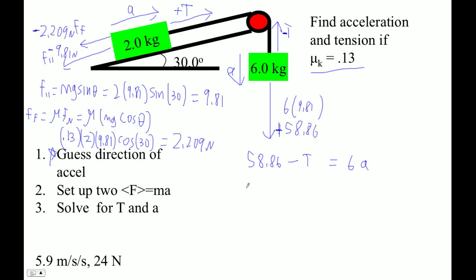So now we're all set. We're going to go T minus the force of friction, 2.209, minus the parallel force, 9.81, equals the mass, which is 2 times A. And now we're set. Now we can just add these together. If we add them, here we have negative T, here we have positive T, and it's all going to add up, and T will be eliminated.